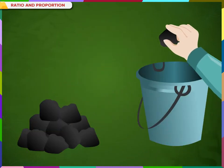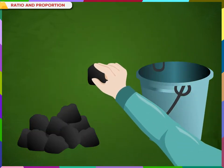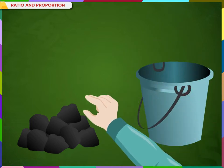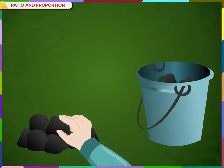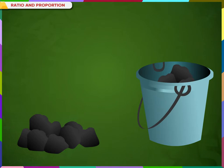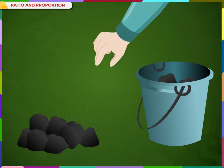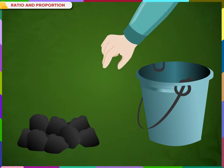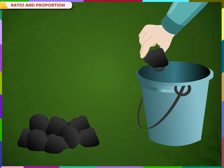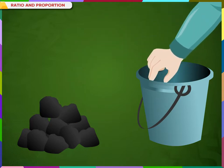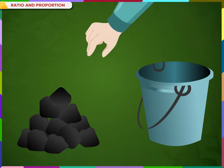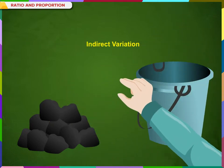Let us now see what indirect variation is. Observe the situation: if one quantity increases, the other quantity decreases — the heap of pebbles increases but the number of pebbles in the bowl decreases. If one quantity decreases, the other quantity increases. These two situations are called indirect variation, also known as inverse variation.